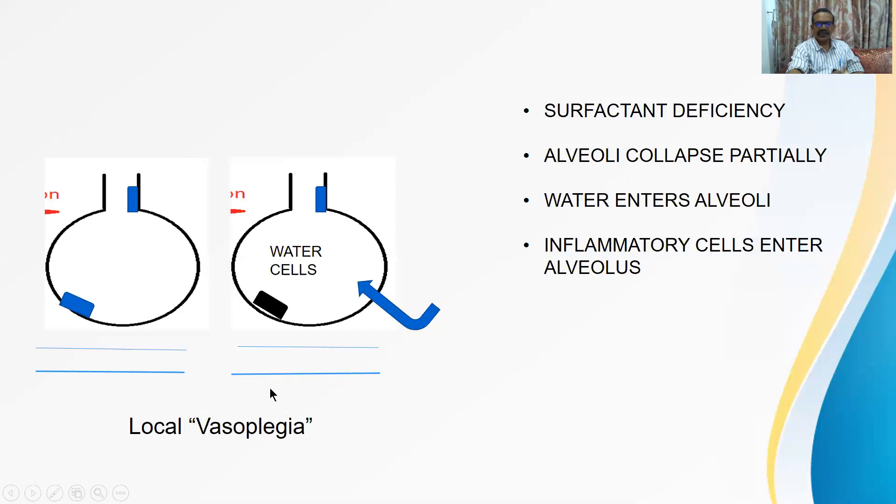In previous we saw that there is hypoxic pulmonary vasoconstriction in C-type, which is normal defense mechanism. But this mechanism does not operate here. Even if the alveolar PO2 is low, there is no local vasoconstriction. This caliber and this caliber is same. So blood keeps on going to useless alveoli. This is paralysis of defense mechanism. That's why you call local vasoplegia, paralysis of vessel. This will be recurring theme in further presentations.